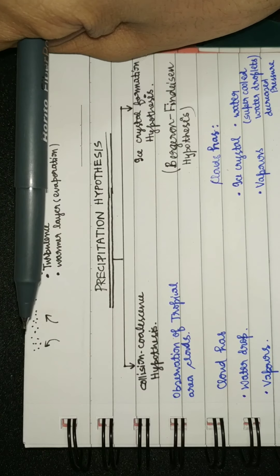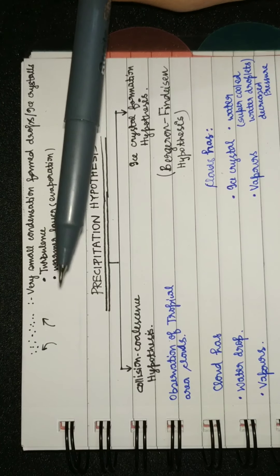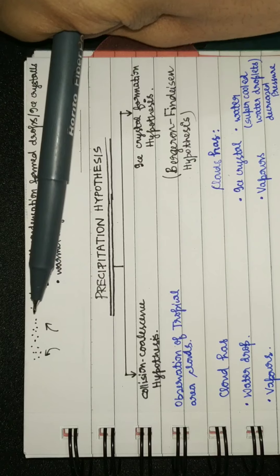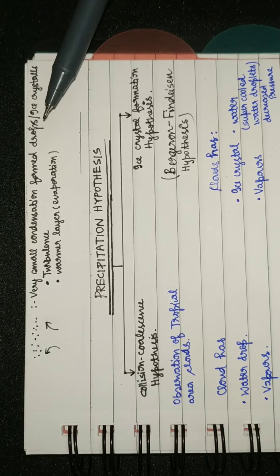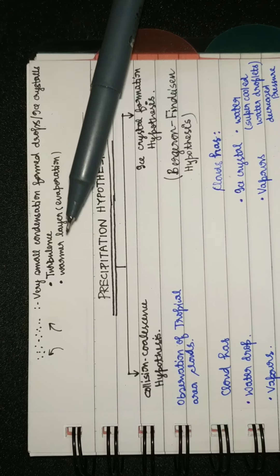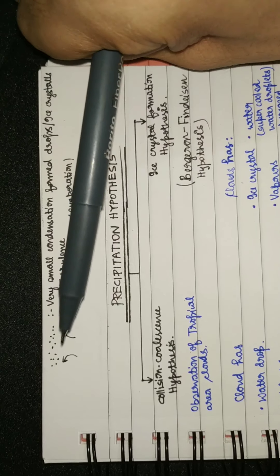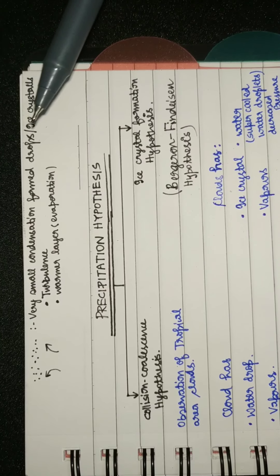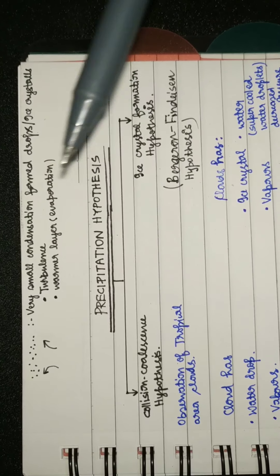The small ice crystals and water droplets undergo problems such as when they fall they undergo warmer layers below, hence they are again evaporated. Secondly, due to high convection currents, the turbulence causes them to rise again to the height. Hence we are coming to a fact that the condensed water droplets and ice crystals must be heavier in order to tackle these two problems.